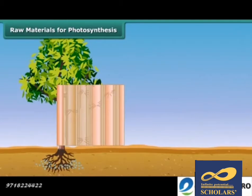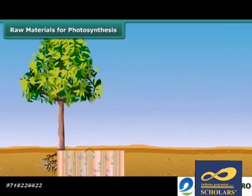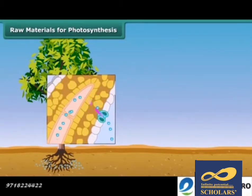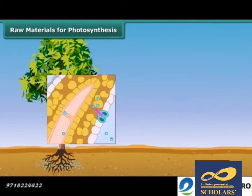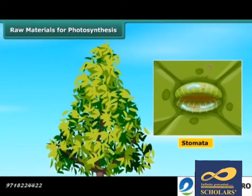These vessels run throughout the root, the stem, the branches, and the leaves. They form a continuous path or passage for water and minerals to reach the leaves. Carbon dioxide from air is taken in through the tiny pores present on both surfaces of the leaves.